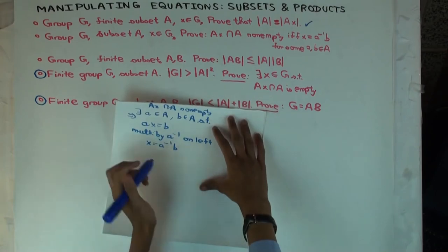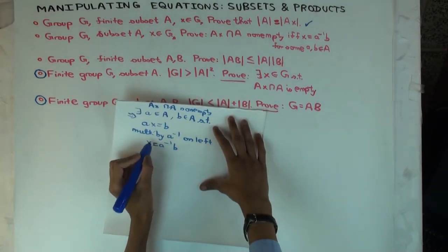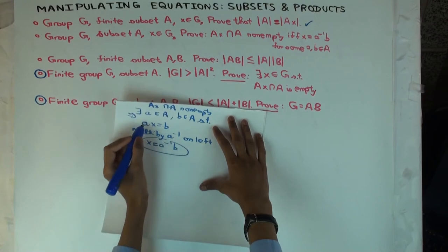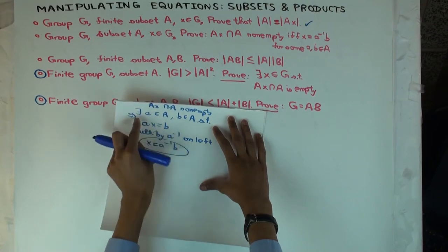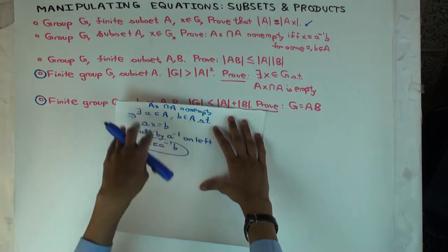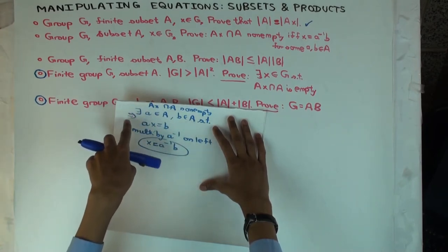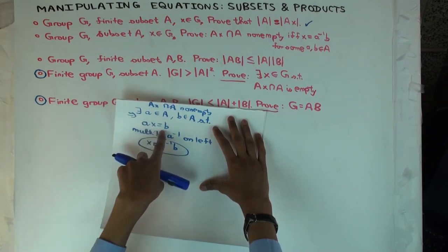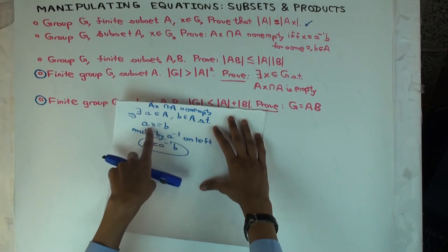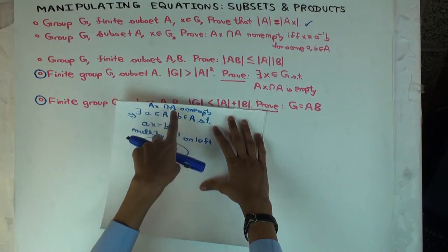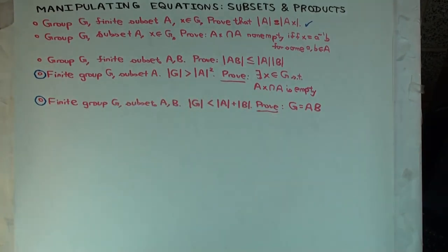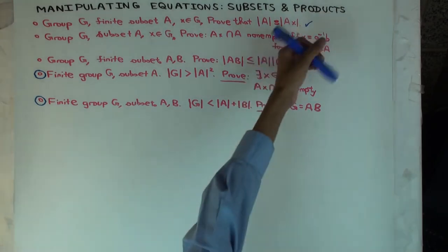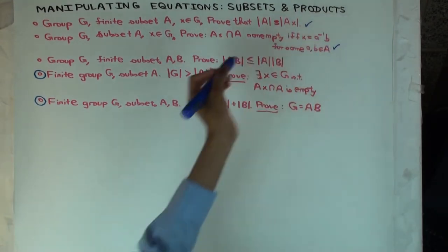You start from here, multiply by A on the left and get this. But now you won't write there exists A and B. The A and B are already given. You start with here, multiply by A, get AX equal B. And therefore you say that this element B, which is also AX, is in both AX and in A. So the intersection is non-empty.